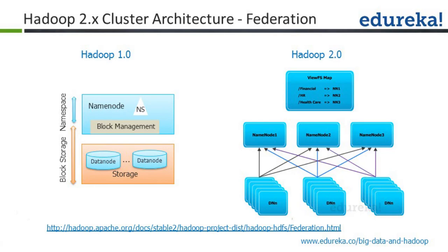After a heartbeat comes in, the name node decides which data node the information goes to. Metadata is always managed in RAM, but in federated name node there is no secondary name node to flush the data from RAM to disk — the name node does it on itself, copying the data back into the block pools. The number of metadata replicas is configurable, just as with secondary name node — you can define how many copies of the metadata you want.